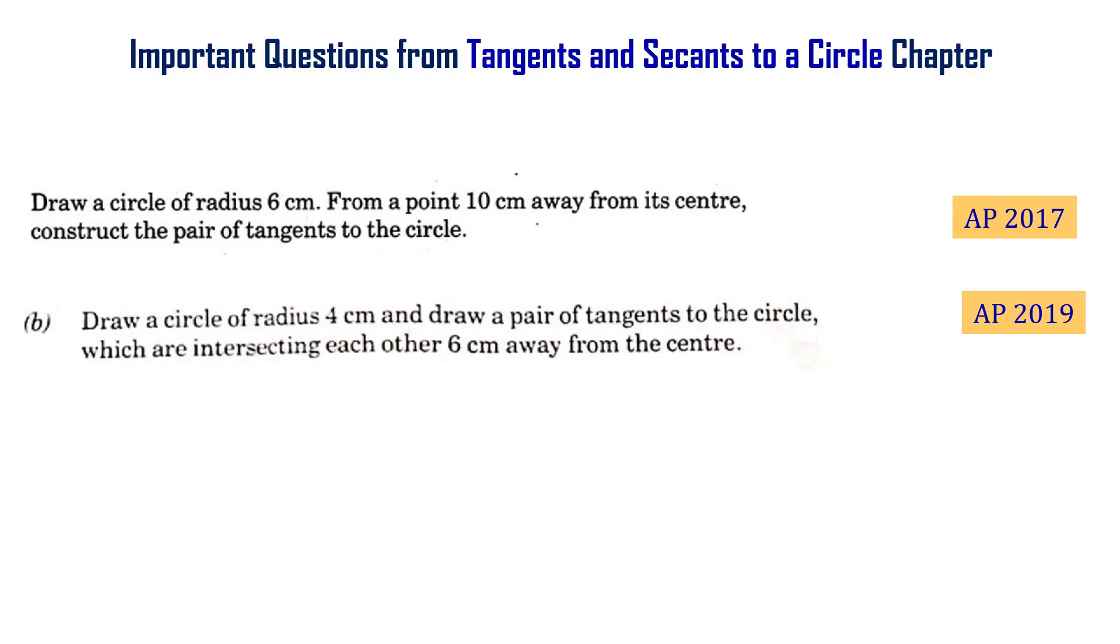Draw a circle of radius 6 cm from a point 10 cm away from its center. Construct the pair of tangents to the circle.